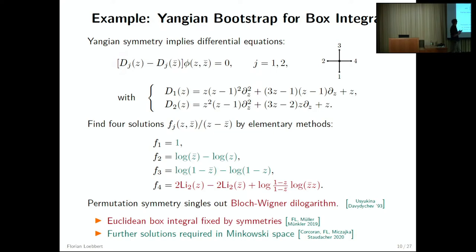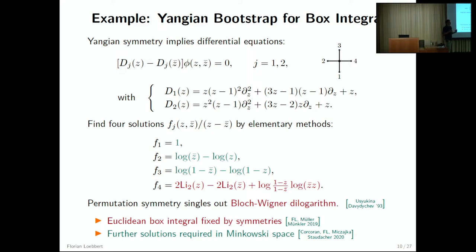You may wonder why there are four solutions and whether Yangian symmetry does not pin down the whole thing completely. In fact one needs the other three solutions to express the integral in Minkowski space. As we've shown with Matthias, Luke, and Julian, the Yangian actually produces all the building blocks you need to completely write down this integral. In Minkowski space you take different linear combinations of these functions depending on different kinematic regions — and these are all the Yangian invariant building blocks needed to express the integral.